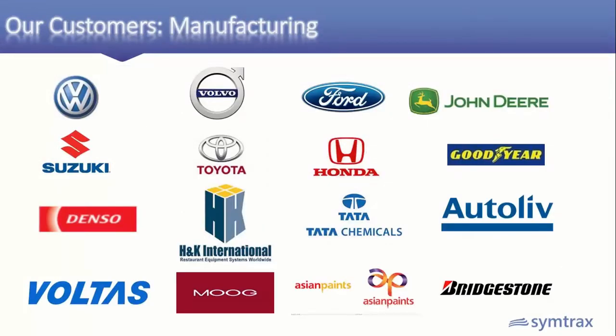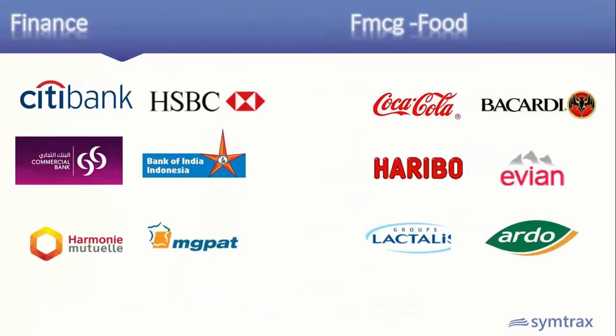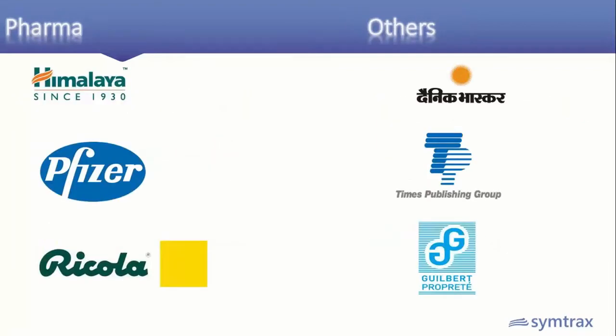Let's have a look at our customers. We have customers in different industries — we are not an industry-specific solution provider. In manufacturing, we have customers like Volkswagen, Volvo, Tata Chemicals, Asian Paints, etc. In finance, we have customers like Citibank, HSBC, etc. In FMCG and food industries, we have customers like Coca-Cola, Bacardi, Haribo, etc. In pharma, we have customers like Himalaya, Pfizer, etc.